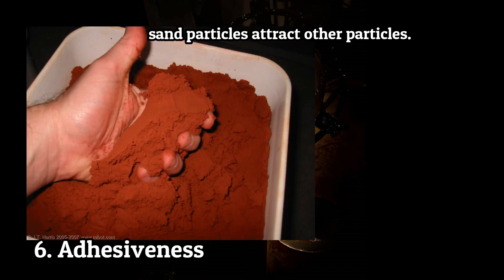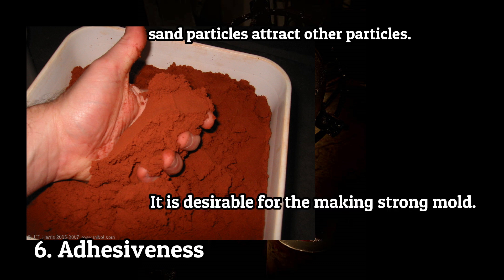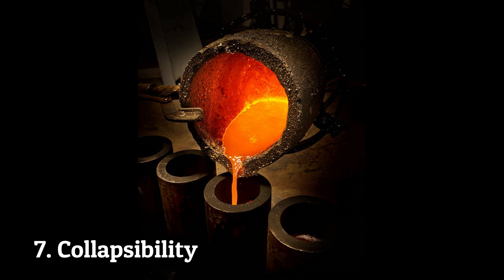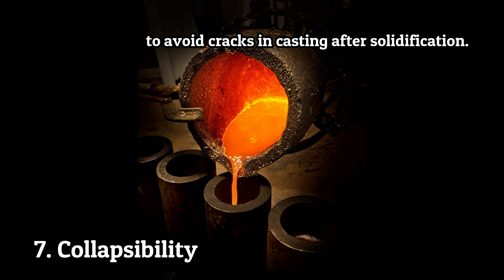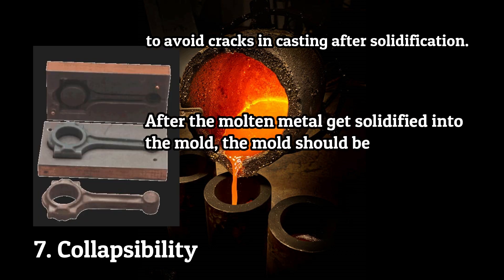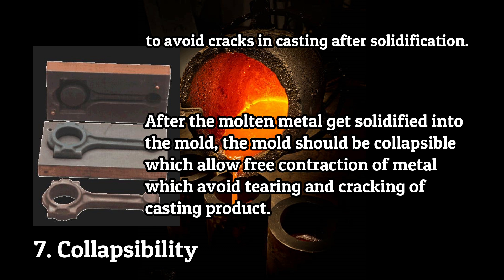Collapsibility is the property of sand due to which sand particles attract other particles, and it is desirable for making a strong mold. This property is required to avoid cracks in casting after solidification. After the molten metal solidifies in the mold, the mold should be collapsible, which allows free contraction of the metal and avoids tearing and cracking of the casting product.